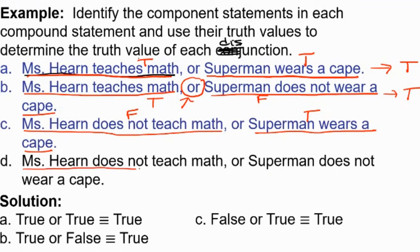And then let's look at part D, Ms. Hearn does not teach math or Superman does not wear a cape. So I know that I teach math, so that component's false. Superman does not wear a cape, definitely false. So false or false. Is there any way I could possibly be telling the truth? No, because I'm guaranteeing at least one of these is the case.